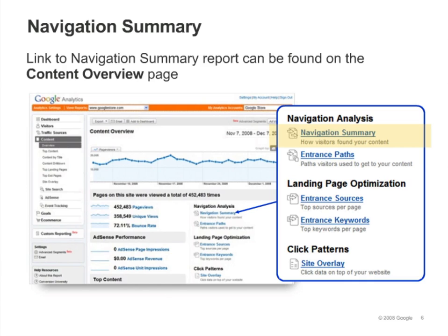Navigation analysis reports can help you understand how people move through your site. The reports are listed on the content overview page, and they're also available from a pull-down menu when you drill down to a page detail report. The first of these, Navigation Summary, can help you see how people arrived at a specific page and where they went afterwards.